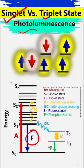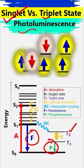There is another phenomenon called phosphorescence, which occurs when electrons jump from triplet states to the ground states. This is why singlet states and triplet states are important to discuss in photoluminescence.